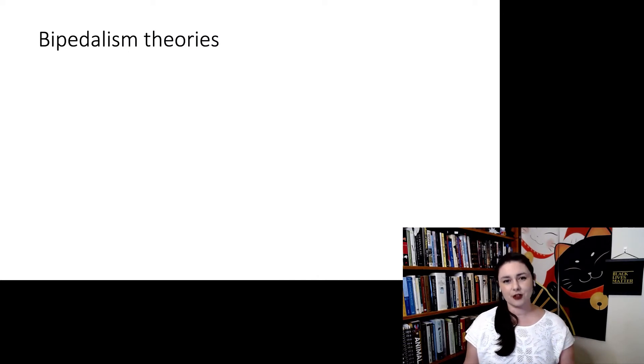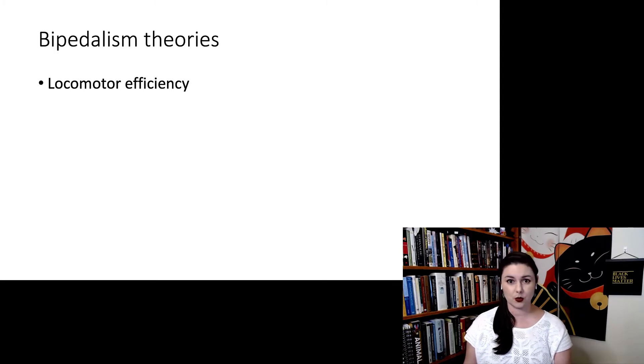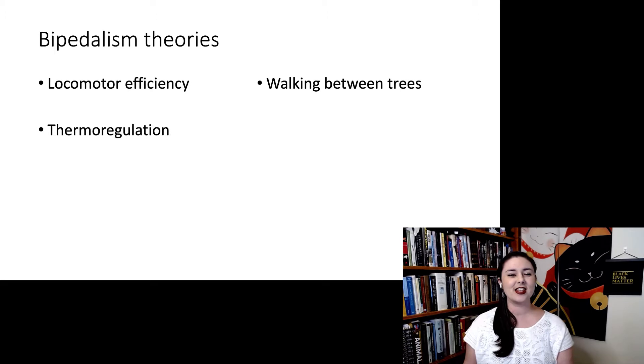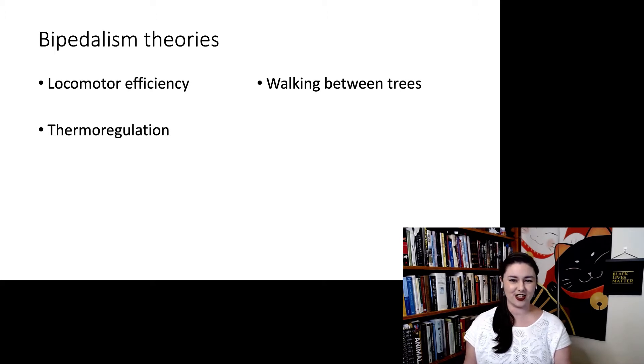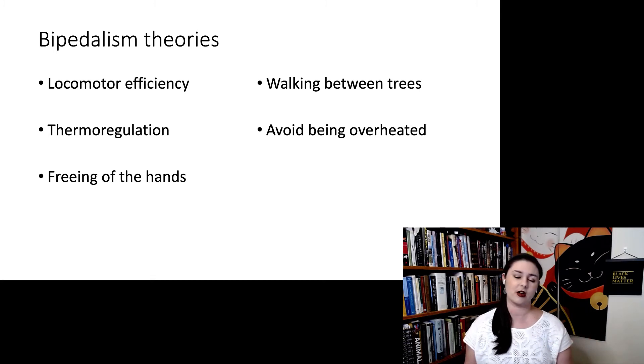So there are many different theories that we just talked about. But let's talk about some of the major ones. Locomotor efficiency is one of them, and this just means that it's easier to walk between trees if you're walking on two legs than all fours. This can be a little bit complicated to really figure out, do we move more efficiently than chimps and all of that? But that's the general idea. The next one is thermoregulation and that we want to avoid being overheated. The next one is the freeing of the hands. Because we are only using two feet to walk, now we can do other stuff with our hands. This is generally related to ideas of tool use.